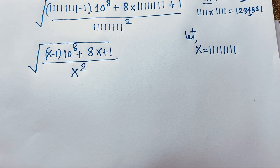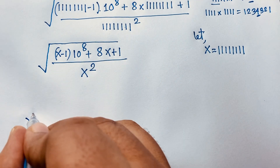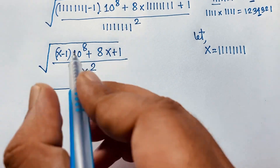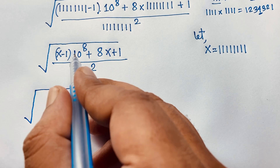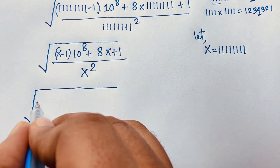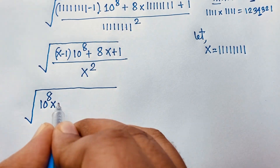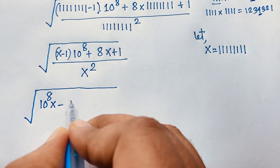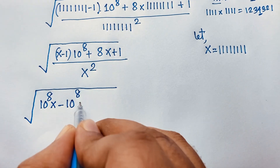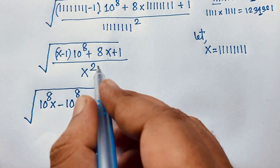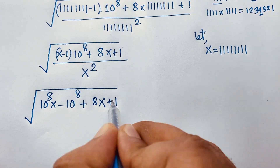Now at this moment, if I evaluate this expression, you can see it will be square root, and this times this it will be 10 to the power 8x. So I take here is 10 to the power 8x, minus this, minus this times this — it will be 10 to the power 8 plus 8x. So I take here is 8x plus 1 over x squared.